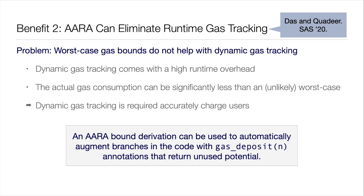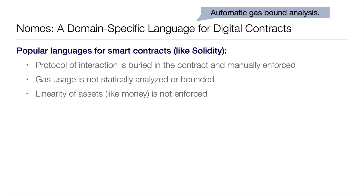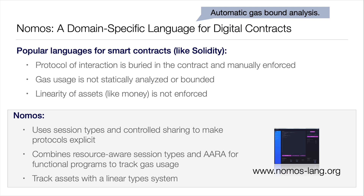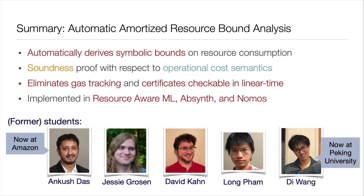I'm out of time. One more slide about Nomos — a smart contract language we developed here. It has similar benefits to what Jonathan was talking about, but it also has automatic gas tracking based on session types. Some of my former students have worked on this work.